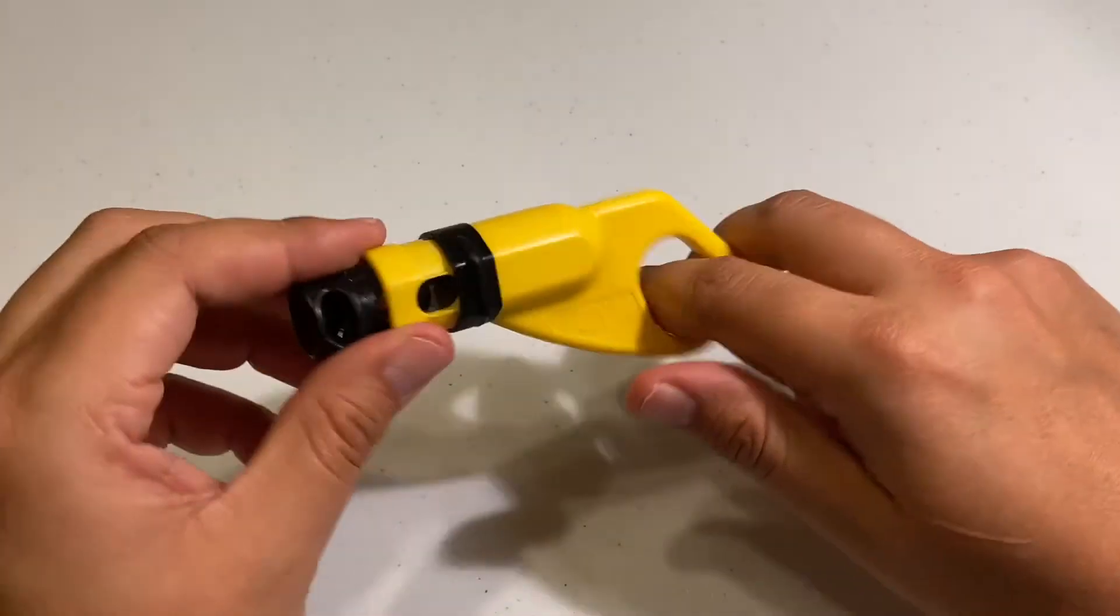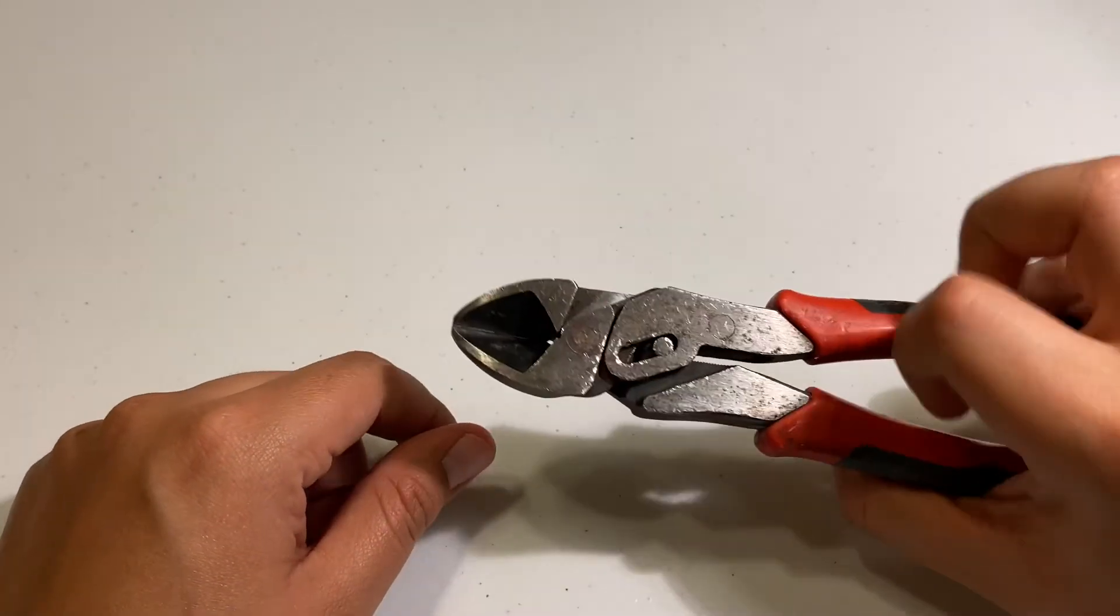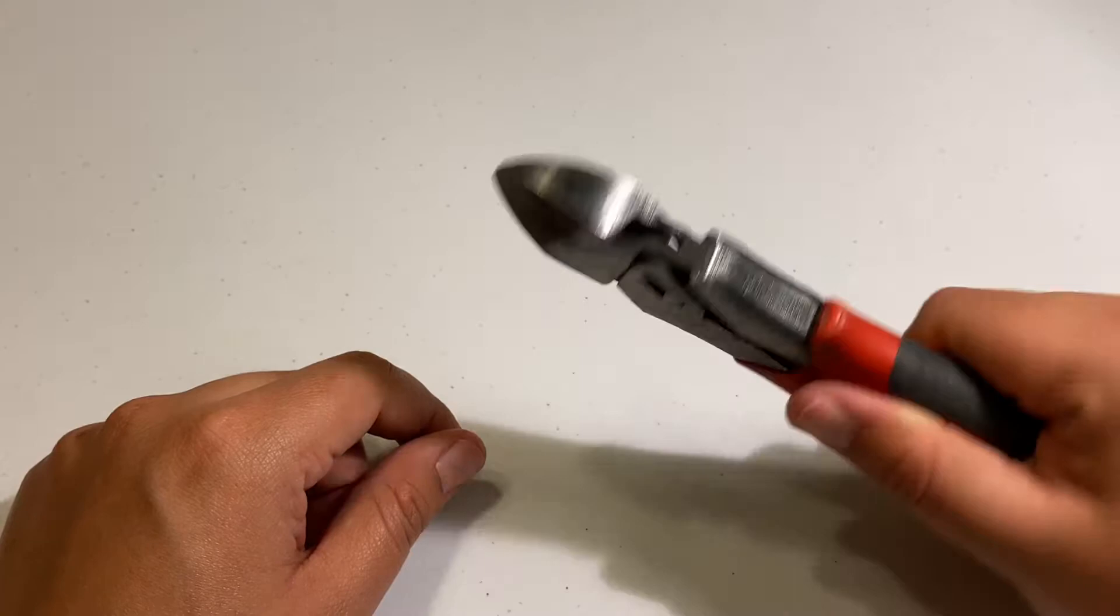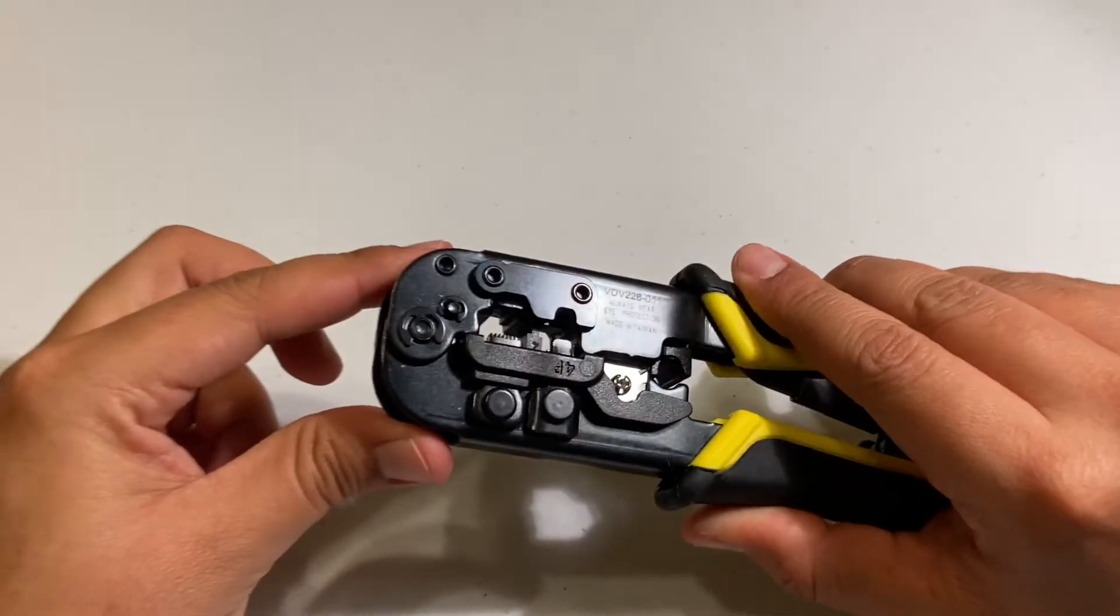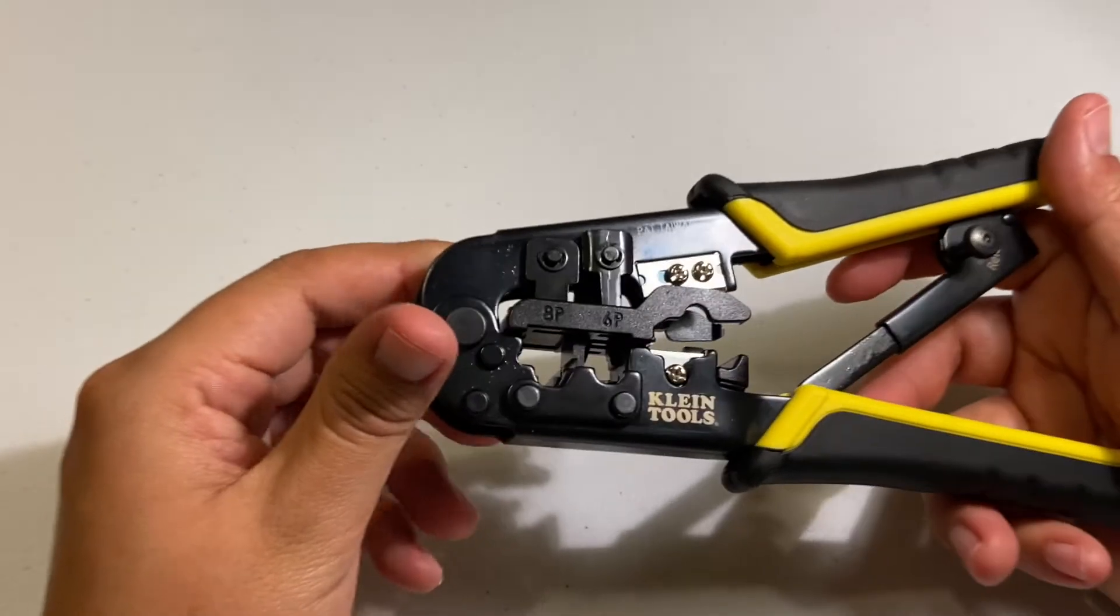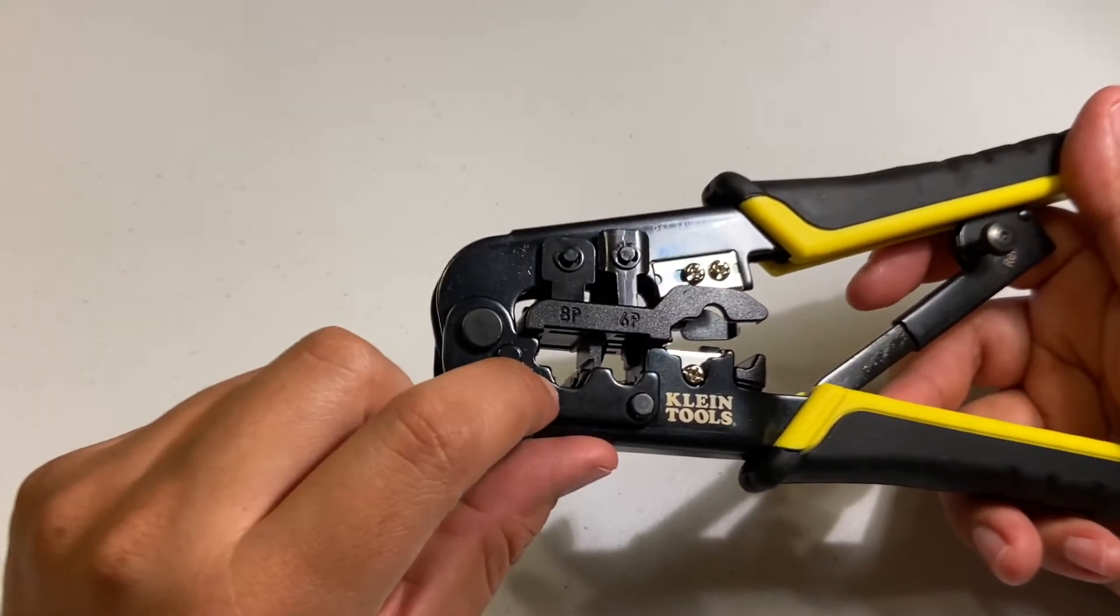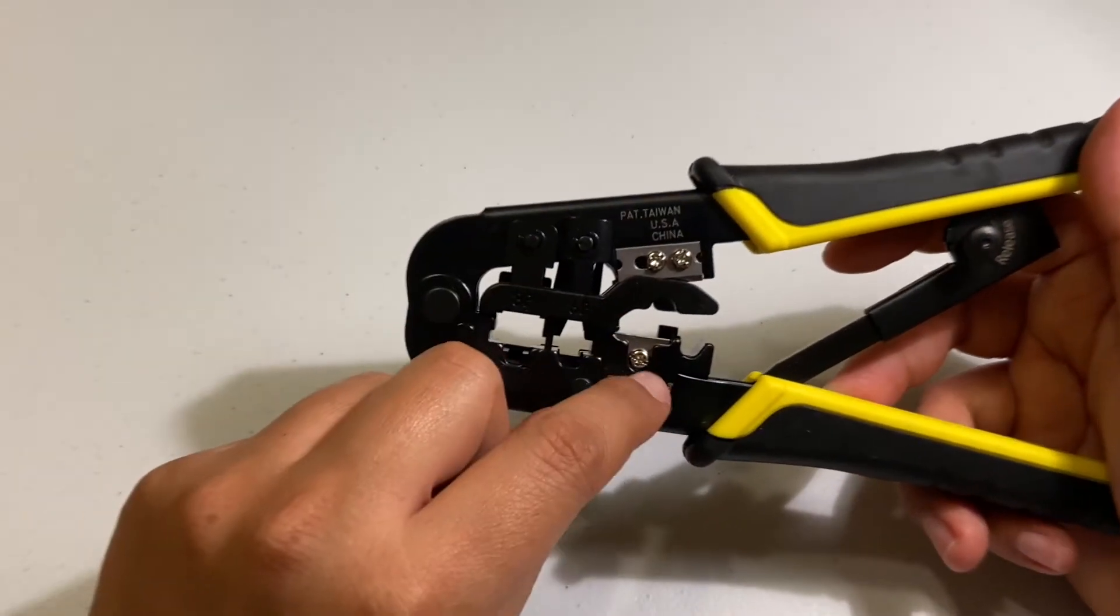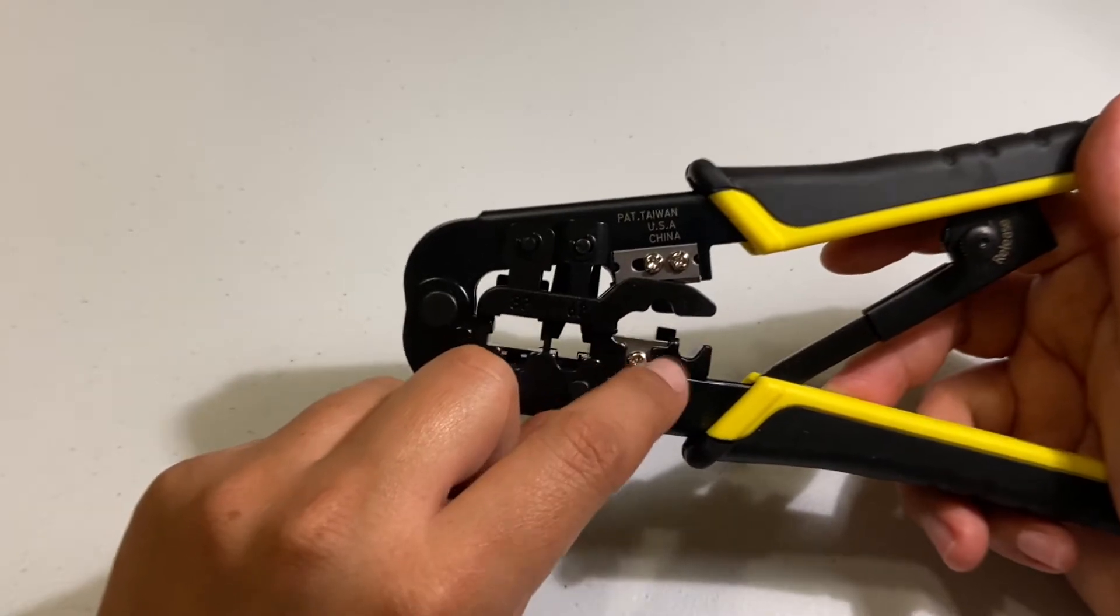You're gonna need some wire cutters. You're gonna need the crimpers. This one has for telephone and ethernet - you can also cut the cable here and these ones can also score it.